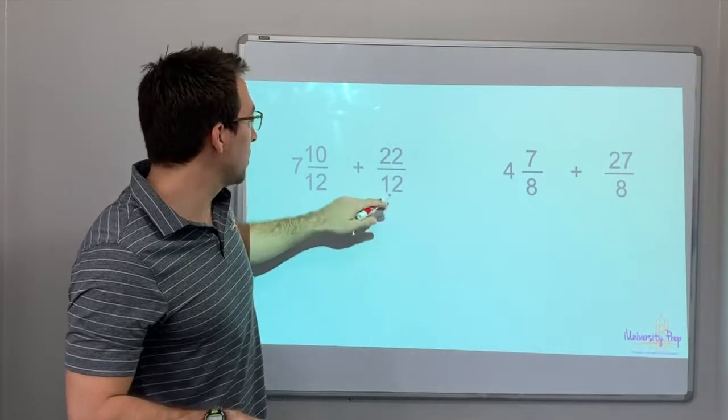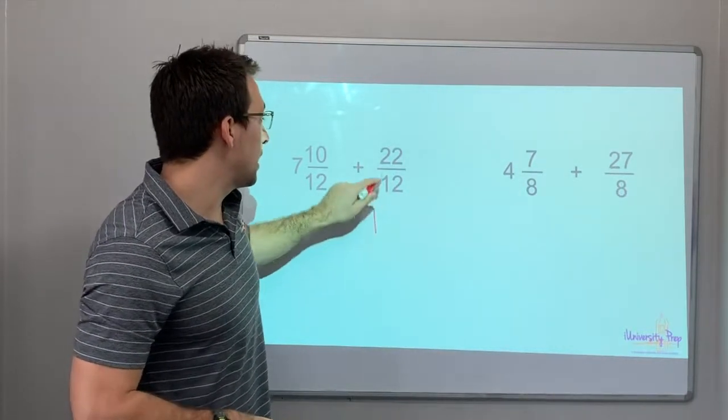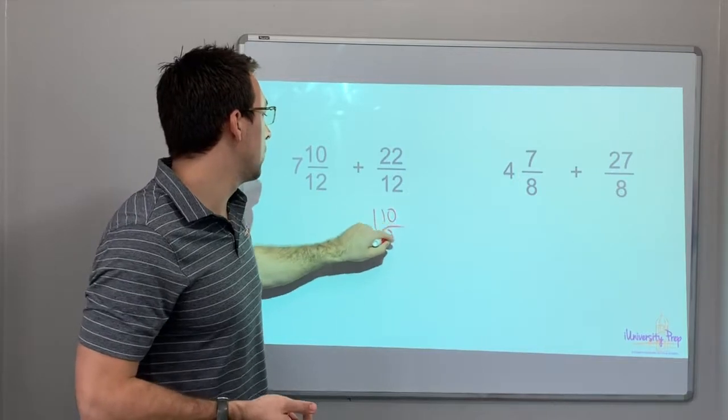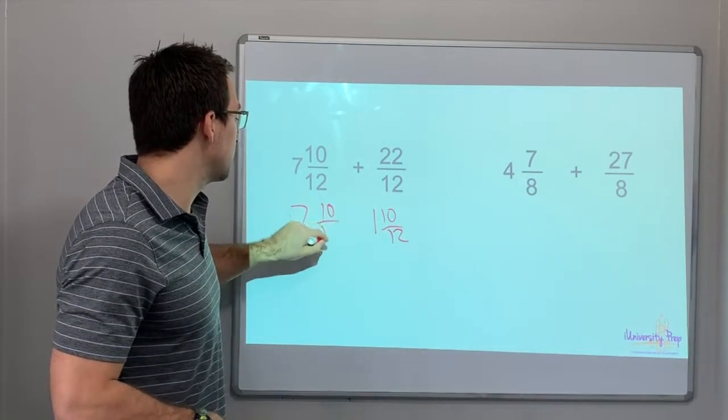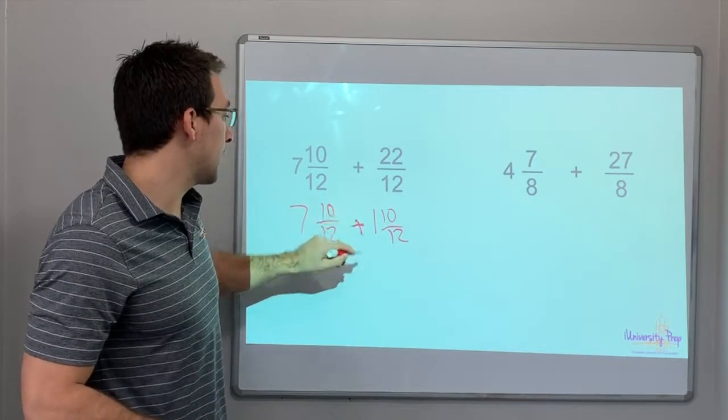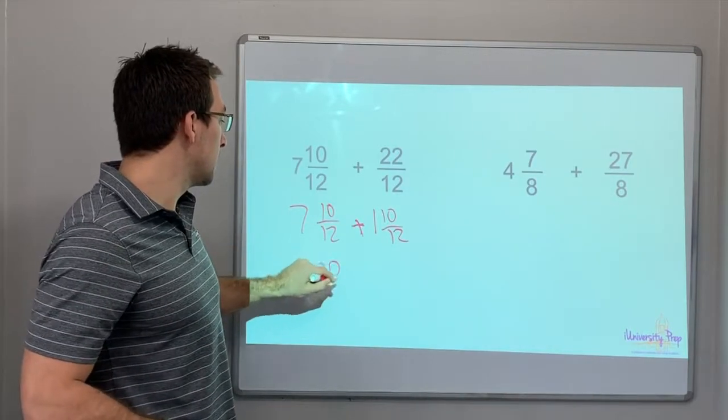12, okay, so 12 goes into 22 one time. And then what is 22 minus 12? 10. So 1 and 10/12. So now we have 7 and 10/12 plus - we're going to add them together. So that would be 8 and 20/12.